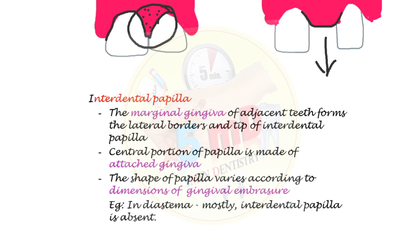In cases of diastema, where there is considerable space between two teeth, the gingiva is firmly bound to the interdental bone and there is no presence of interdental papilla. Thus the shape of the interdental papilla also varies depending on the shape and dimension of the gingival embrasure.